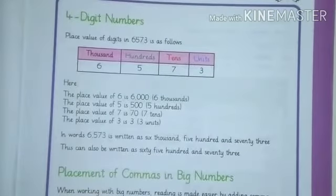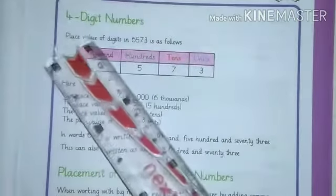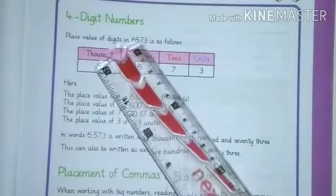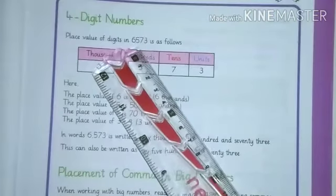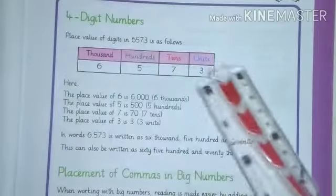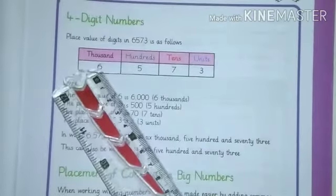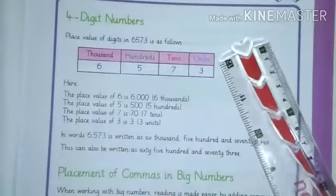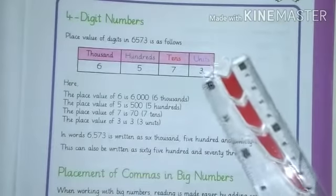Assalamualaikum dear students, welcome to the maths class of class 3. Today we will start the topic four digit numbers. So our first four digit number is 6573. We are always starting from right side to give place values of these numbers.